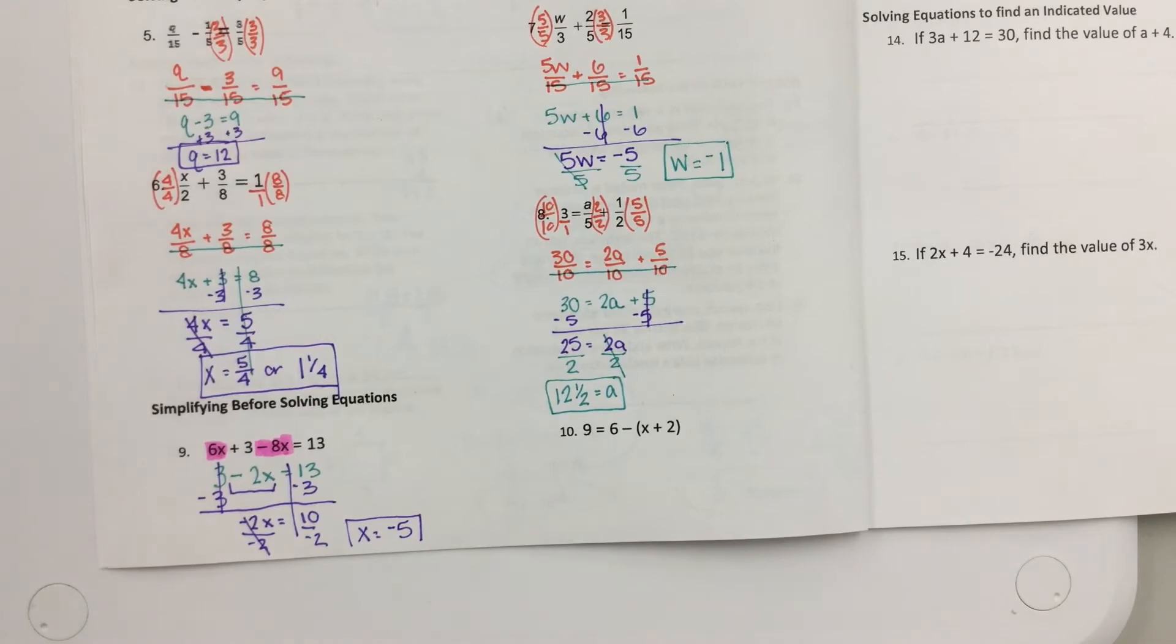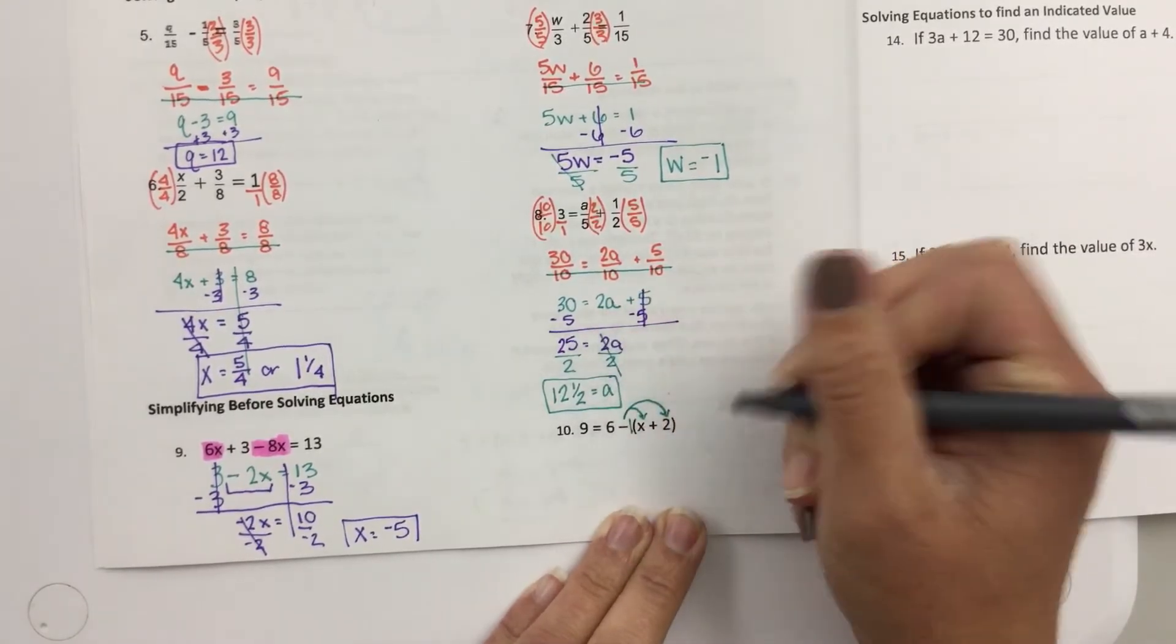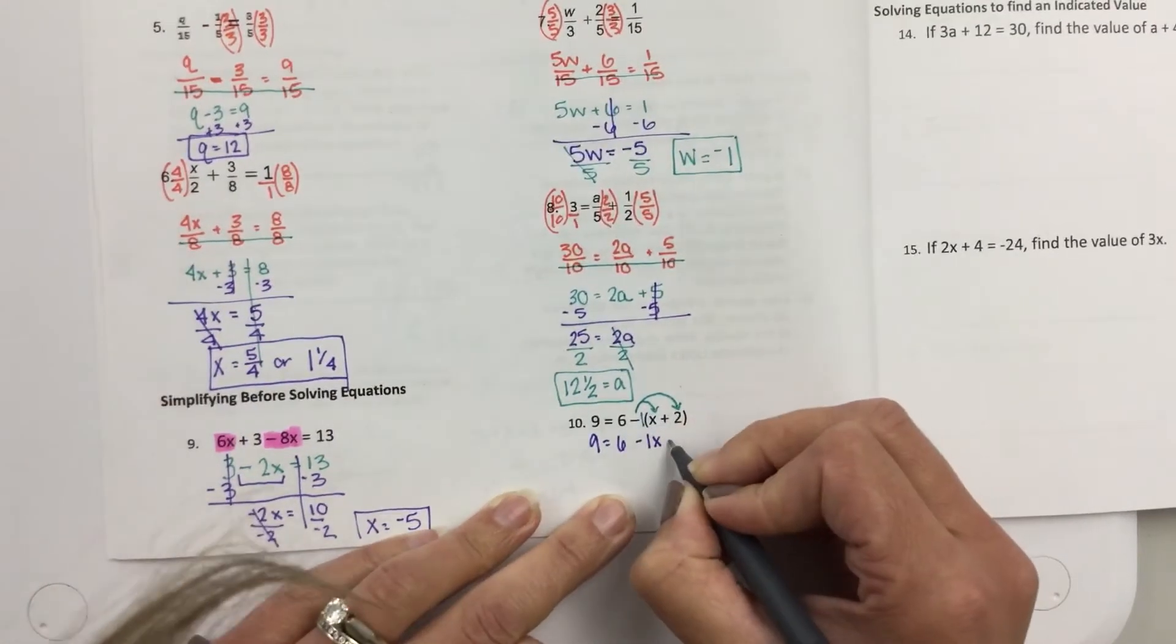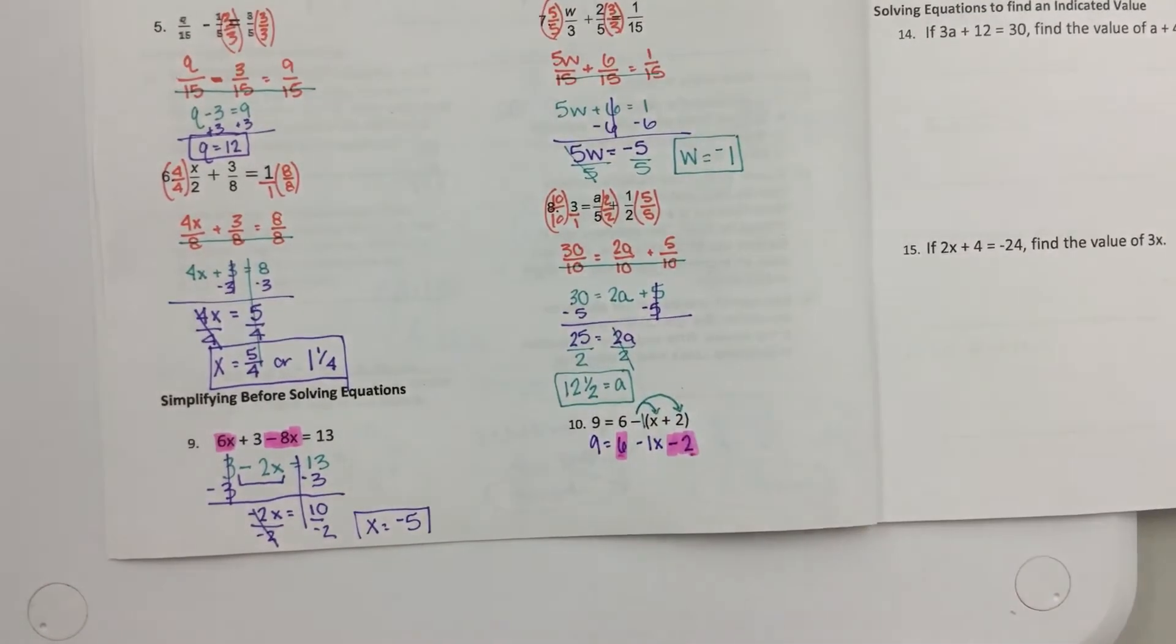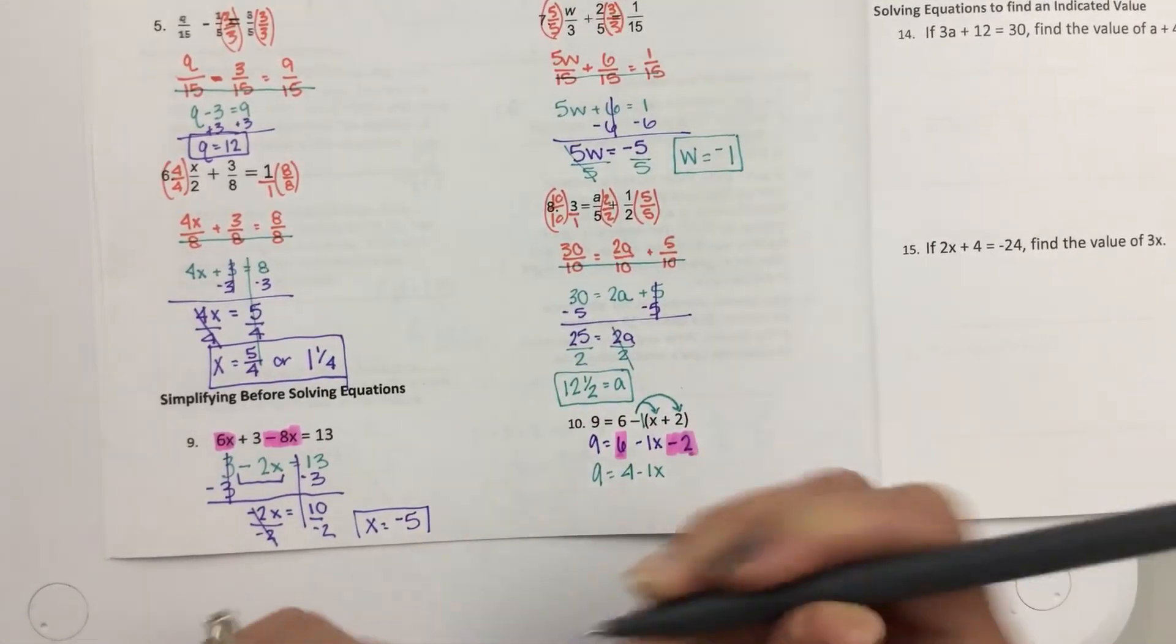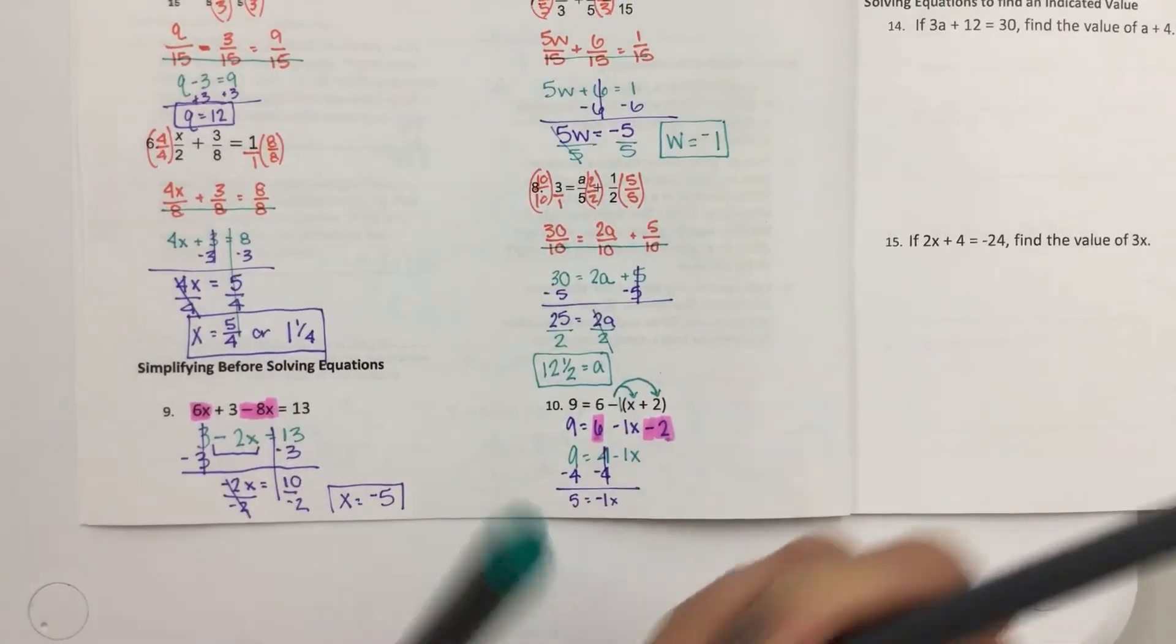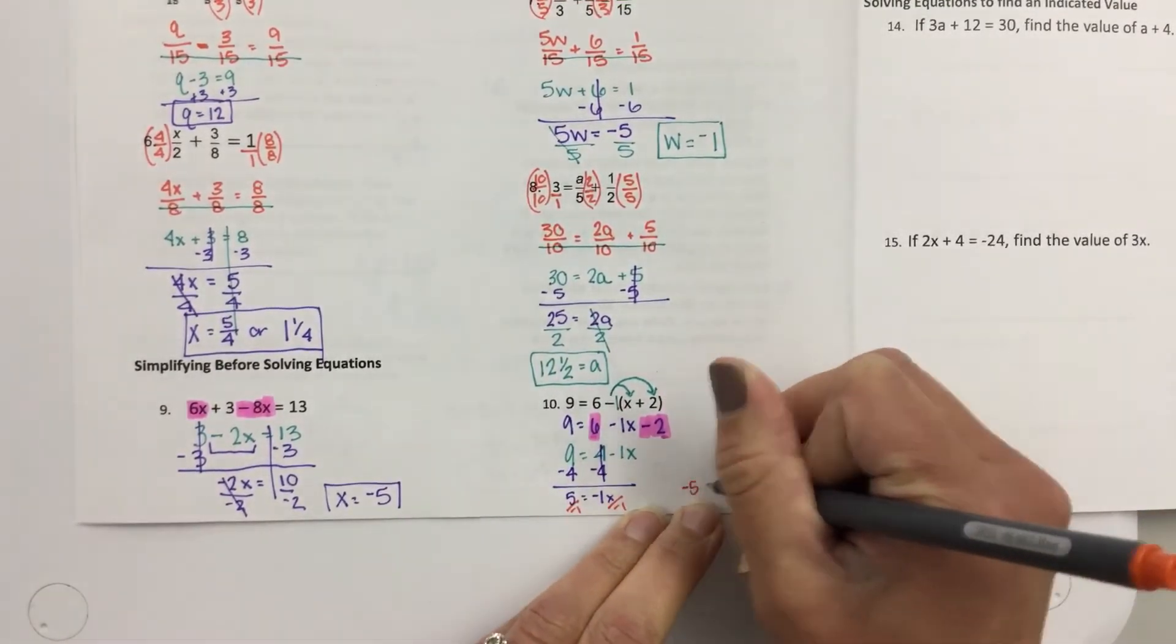This next one here is a little bit tricky. We had some on our worksheet like this the other day that we had that negative 1 there. And this has to be distributed to both inside the expression. So this is 9 equals 6 minus, and I'll just put the 1x there. Negative 1 times positive 2 is a negative 2. Then what can I combine? Well, I can combine my 6 and my minus 2. So I get 9 equals 6 minus 2 is 4 minus 1x. Then I would move that 4 to the other side first. And you get 5 equals negative 1x. When I divide both sides by that negative 1, I get negative 5 equals x.